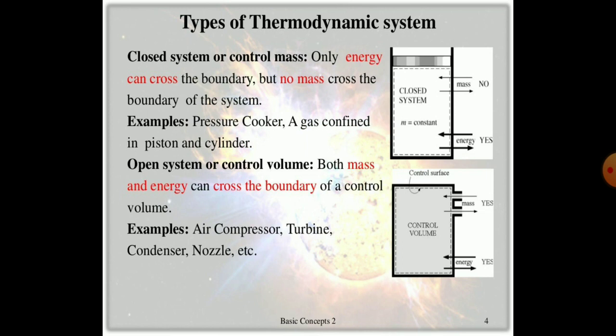Another type of system is the open system, also called the control volume. In an open system, both mass and energy can cross the boundary of the control volume. Examples include an air compressor, turbine, and condenser.